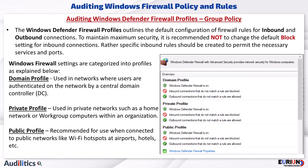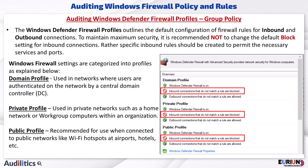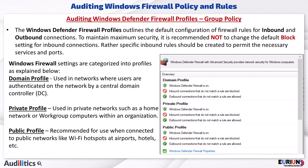The Windows Defender Firewall Profiles outline the default configuration of firewall rules for inbound and outbound connections. To maintain maximum security, it is recommended not to change the default block setting for inbound connections. Rather, specific inbound rules should be created to permit the necessary services and ports.